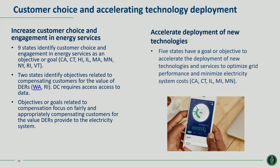The second objective is around increased customer choice. Nine states identified customer choice, engagement in energy services, or data access as objectives. Some objectives focused on fairly and appropriately compensating customers for the value of DERs provided to the electricity system. About 20% of states had a goal to accelerate the deployment of new technologies and services to optimize grid performance and minimize electricity system costs.